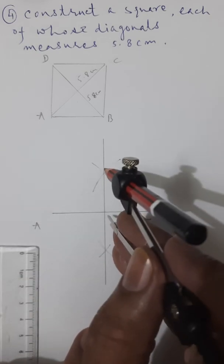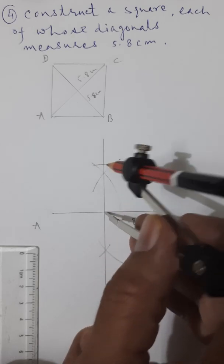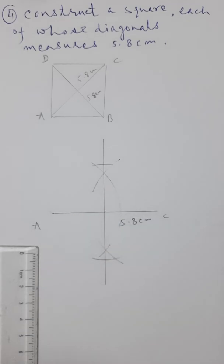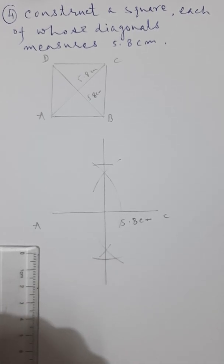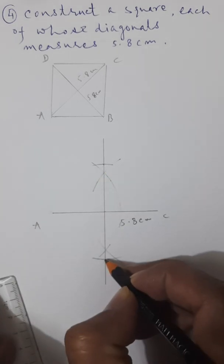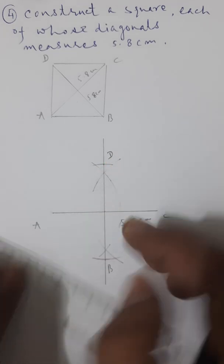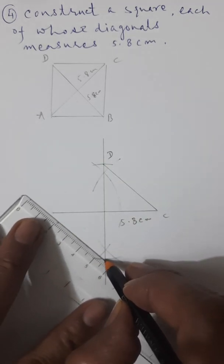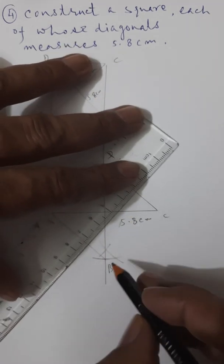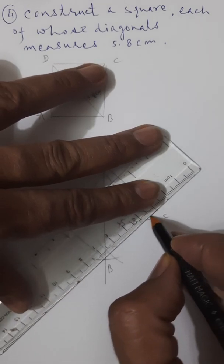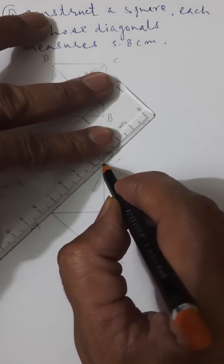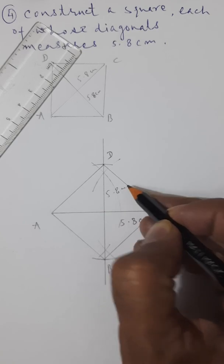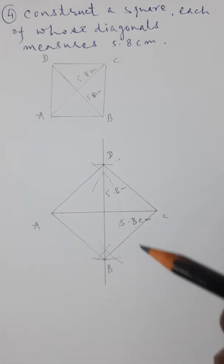Draw this. This is the center point, so measure it with compass. Keep it on center and cut arcs on the perpendicular bisector to mark the other diagonal. This gives us points A, B, C, and D. Now join D with C, B with A, B with C, and D with A. We have joined all vertices A, B, C, D. This diagonal is also 5.8 centimeters. This is your required square.